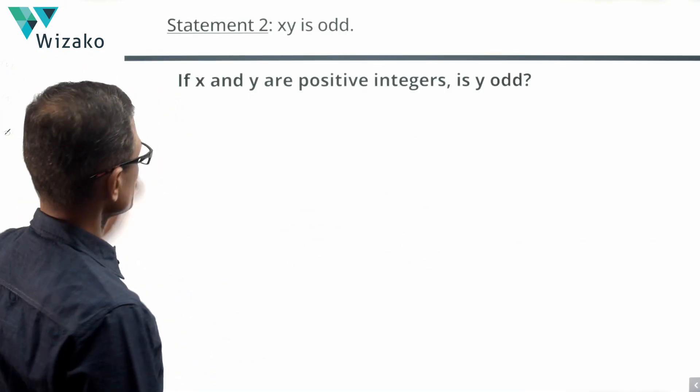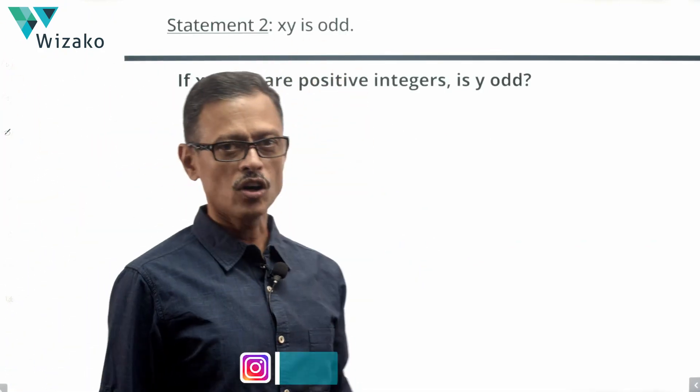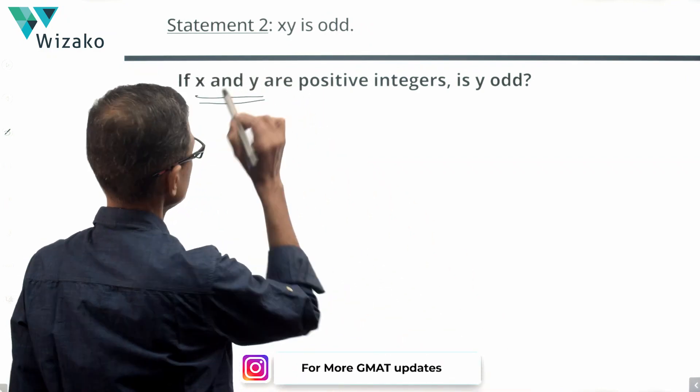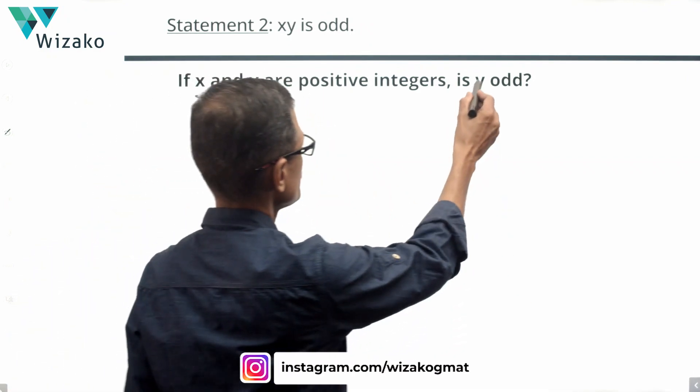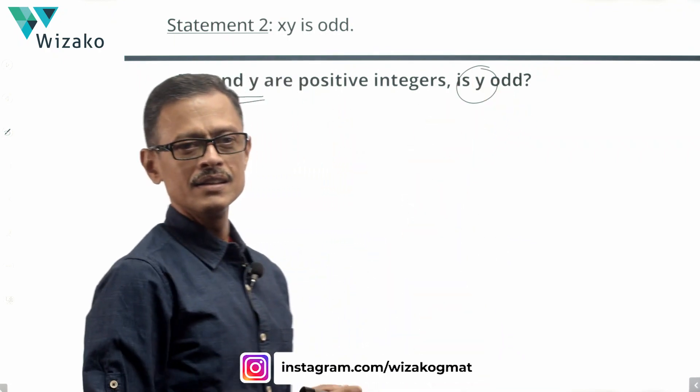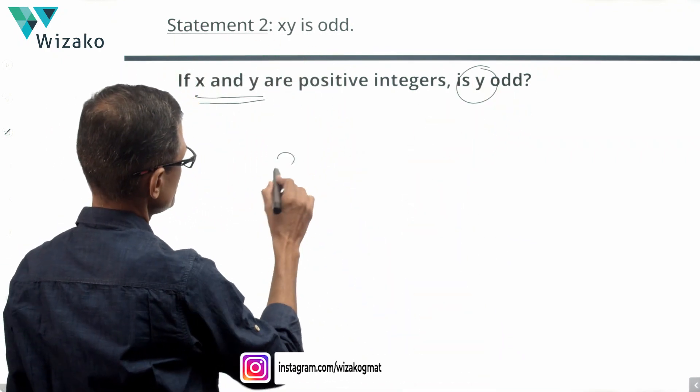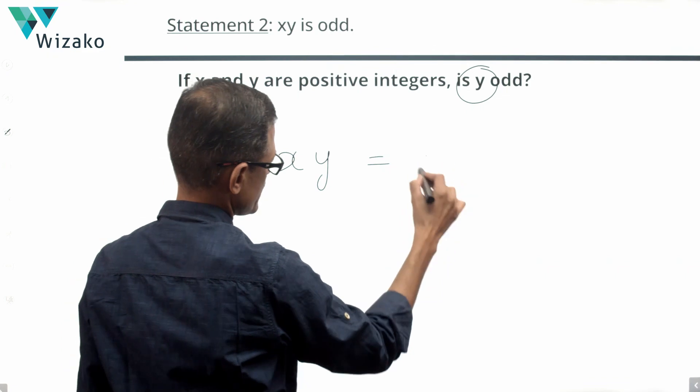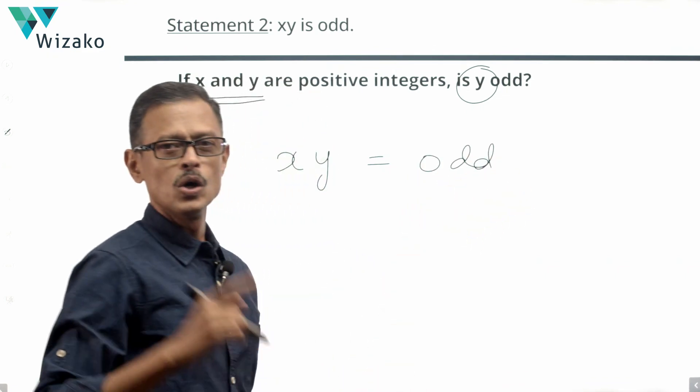It's a beautiful statement: xy is odd. We know x and y are positive integers. We need to determine whether y is odd. The product of two positive integers is odd, let's say this is equal to odd, only when both those integers are odd.